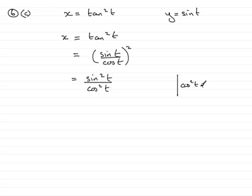Well, we know the identity cos²t + sin²t = 1. Rearranging this, cos²t = 1 - sin²t, and that's the identity I want to use in the denominator here.